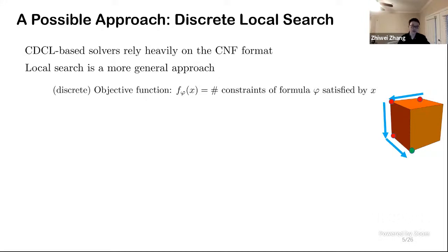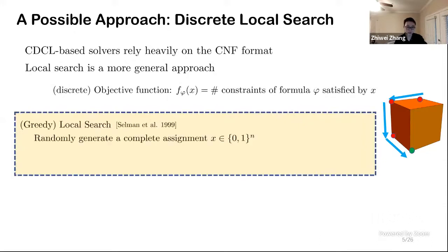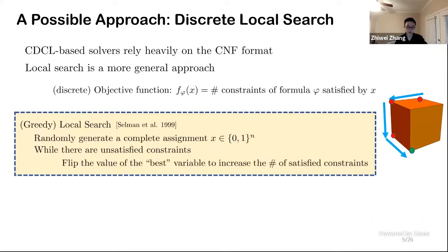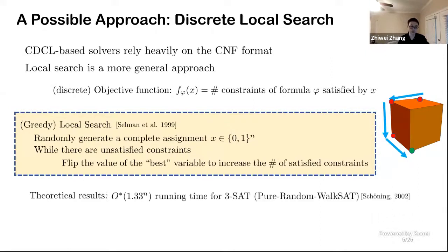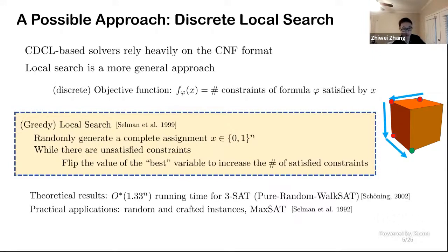In local search, the objective function is defined by the number of constraints of a formula satisfied by some assignments. There are many classical algorithms in this area. GSAT is one of them, where you start from a random initial point and you just keep flipping the variables with the best value until you reach a solution. Local search gives us interesting theoretical results, and in practice it was shown to be effective on hard random and crafted instances as well as max-set instances.